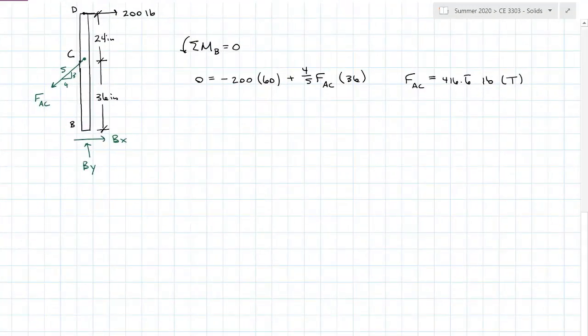I can now plug it into my equation. Deflection A to C equals P, 416.6 pounds, times the original length 60 inches, all over the cross-sectional area pi over 4 times 0.75 inches squared, and the modulus of elasticity for aluminum taken from the back of your book, which is 10.6 times 10 to the sixth psi.